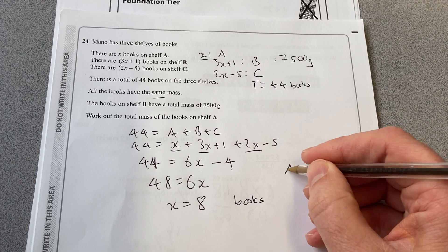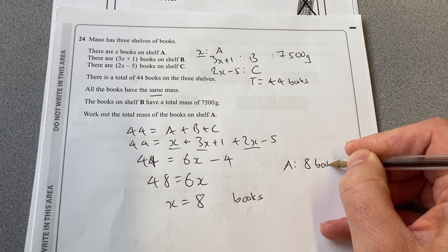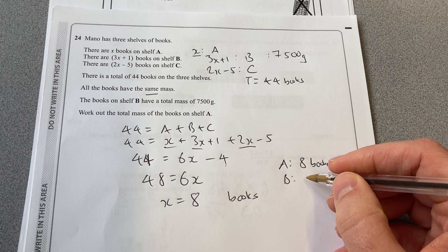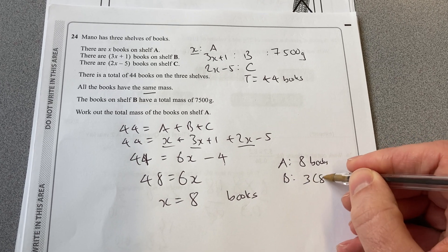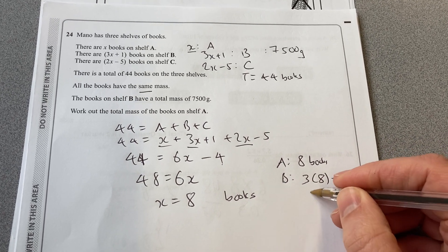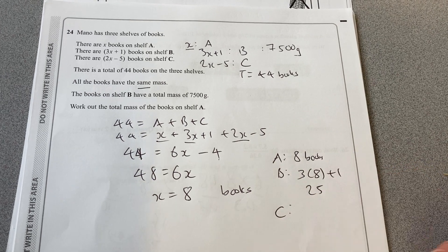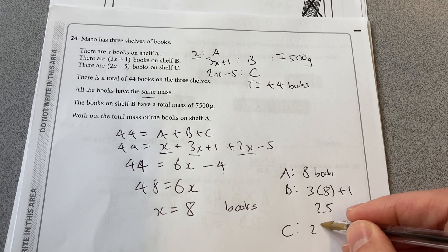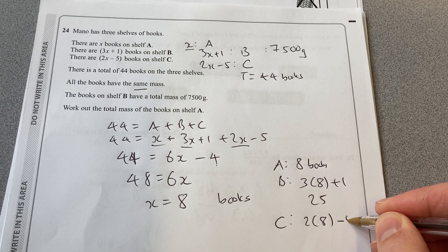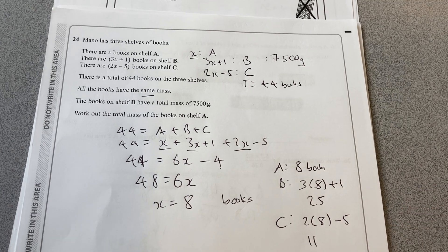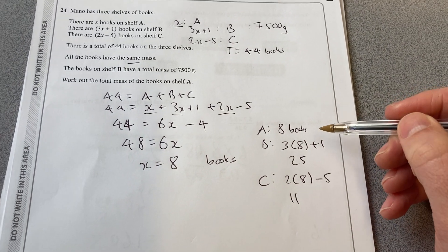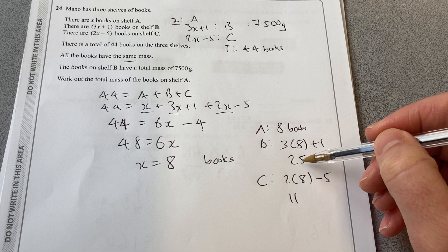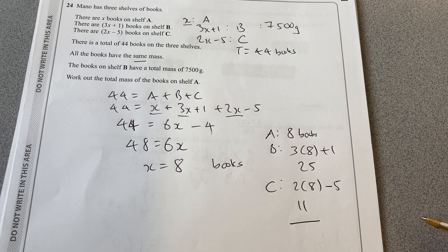So A has 8 books. B has 3 times 8 plus 1, which is 25. And C has 2 times 8 minus 5, which is 11. Now I can check that. 8 plus 25 is 33, plus 11 is 44. So I know that adds up to 44.